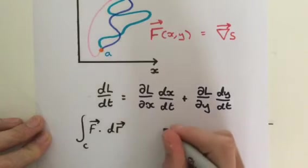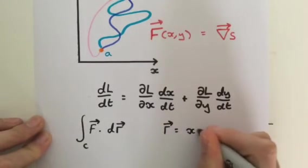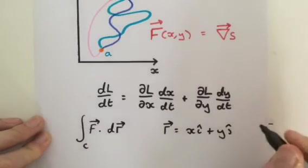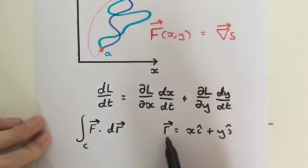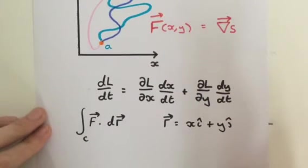Again, we know that r is equal to x times i plus y times j. Remember, this r is a vector-valued function for our curve C.